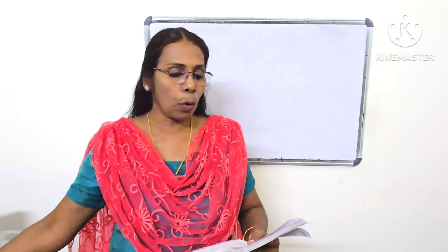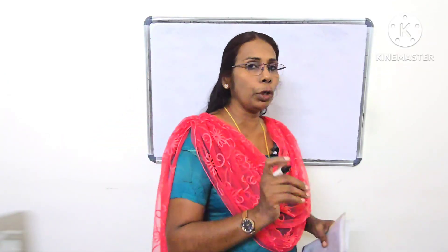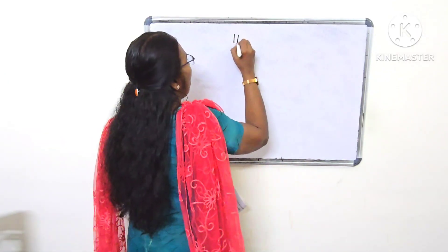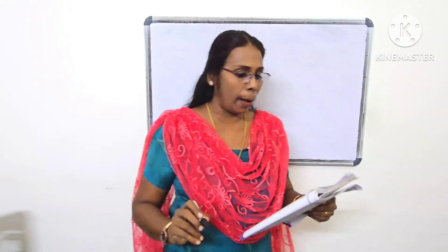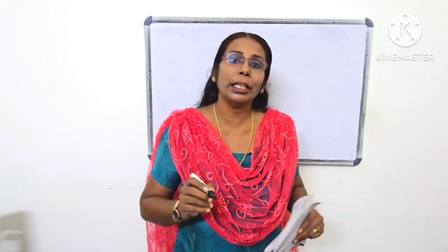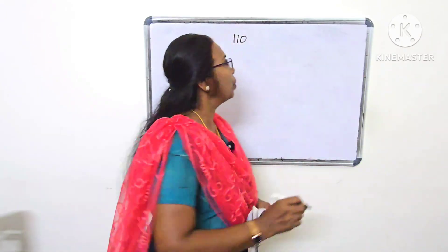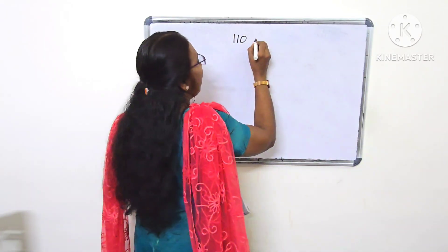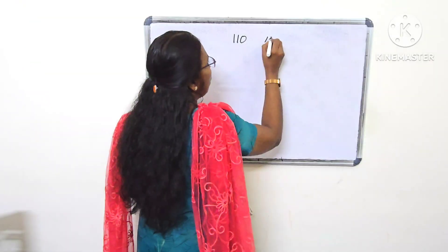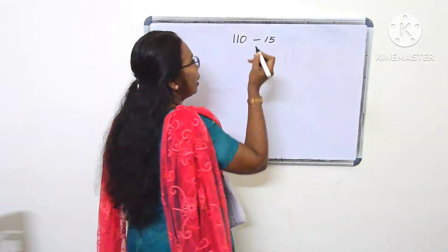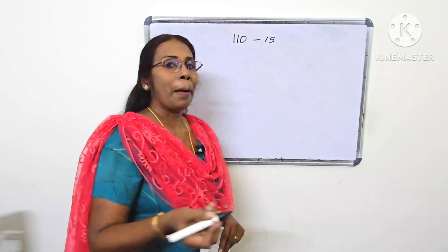Gobu has 110 rupees. He took out 30 rupees. The pen costs 10 rupees. How much money is here? How much money is this?